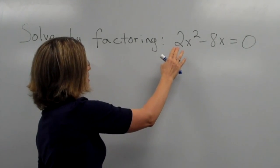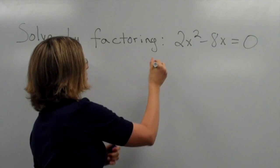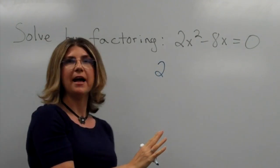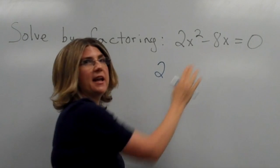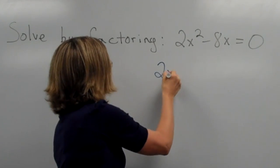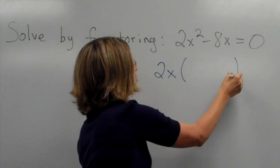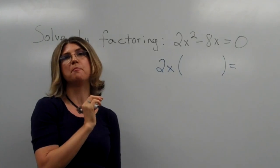the biggest number that goes into both 2 and 8 is 2, and the highest power of x that goes into both x squared and x is x. So essentially we factor out the 2x from this binomial.